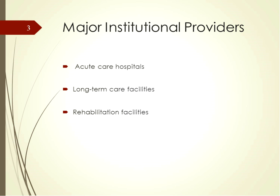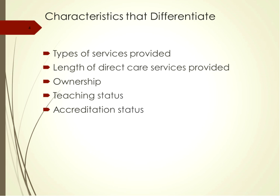There are three major institutional providers: acute care hospitals, long-term care facilities, and rehabilitation facilities. Even though many positions have evolved externally from hospitals over the past few decades, hospitals remain the largest employer of nurses.